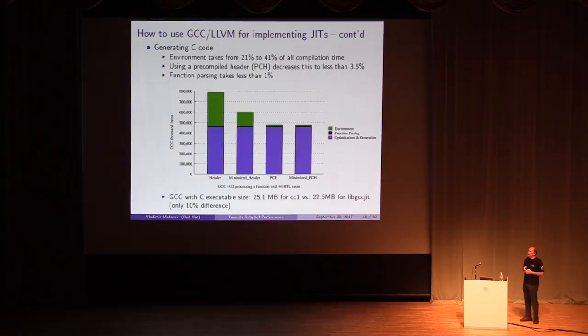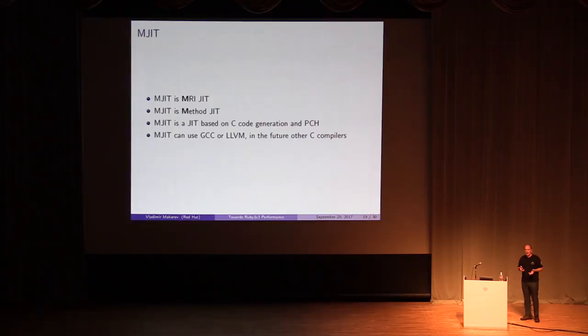Parsing C code, implementing an RTL instruction sequence is quite small, less than 1 percent. But parsing the environment is pretty big. Even if we throw away unnecessary declarations. But if we use the pre-compiled environment, its processing drops to less than 3.5%. So basically, by using pre-compiled headers, we speed up JIT compilation by about two times. As for code size, there is practically no difference between LibGCCJIT and GCC itself. So in my implementation of JIT in MRI, I use C code generation and pre-compiled headers. I simply called it MJIT. M here stands for MRI and method. Because it's a method JIT, not a trace JIT.